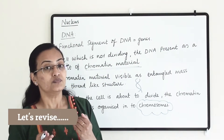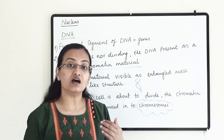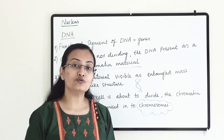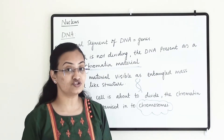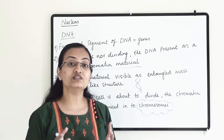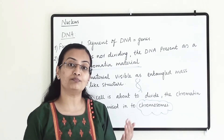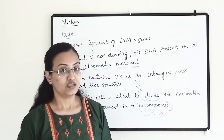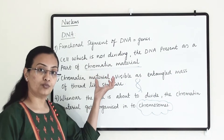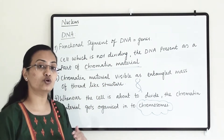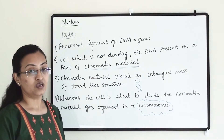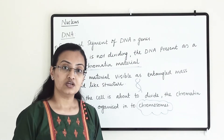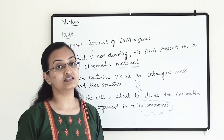Within the nucleus, the nuclear membrane permits the movement of material in and out of the nucleus. Inside the nucleus, chromosomes and DNA are present. DNA's functional segment is a gene. Chromosomes carry all the special characteristics inherited from parents to the next generation. Chromosomes will not be visible until the cell divides, as they are part of chromatin material organized into chromosomes only when cell division begins. The nucleus is the control and coordination center of the cell, overseeing cell division, chemical activities, and cell maturity.